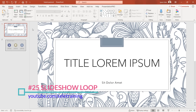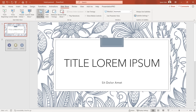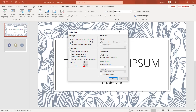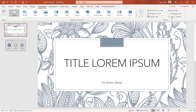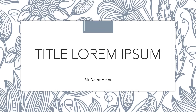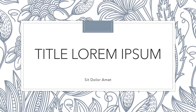Tip 25: Slideshow Loop. To make a PowerPoint presentation play in a continuous loop, first go to the Slideshow tab, click Setup Slideshow, and check the box for Browsed at Kiosk. Hit OK. Then go to the Transitions tab, check the After box, set the time you want each slide to display, and apply to All. Now when you start the slideshow it repeats in a continuous loop.